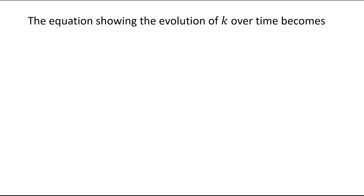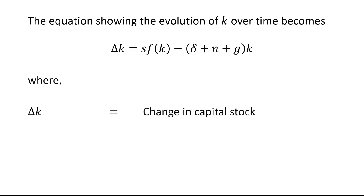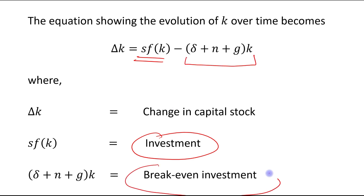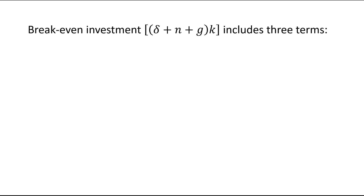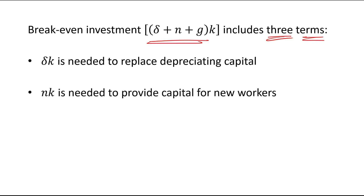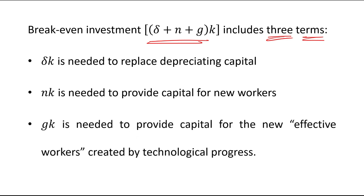The equation showing the evolution of capital per effective worker over time has two portions: investment and break-even investment. Break-even investment includes three terms: delta times k, which is needed to replace depreciating capital; n times k, which is needed to provide capital for new workers; and g times k, which is needed to provide capital for new effective workers created by technological progress.